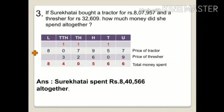Question 3: If Surekha bought a tractor for rupees 8,07,957 and a thresher for rupees 32,609, how much money did she spend altogether? Students, we have to analyze two things: find out what information is given and what we need to find out. Ask these questions: What is 8,07,957 and what is 32,609? The answers will help us form the statement. 8,07,957 is the price of a tractor and 32,609 is the price of a thresher.